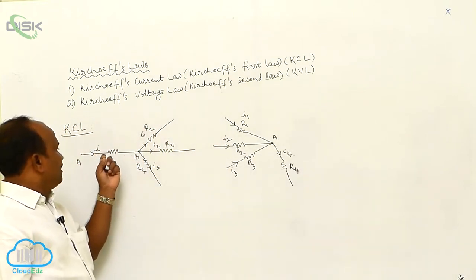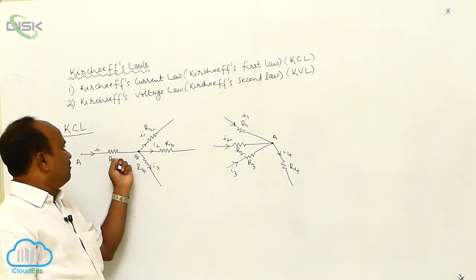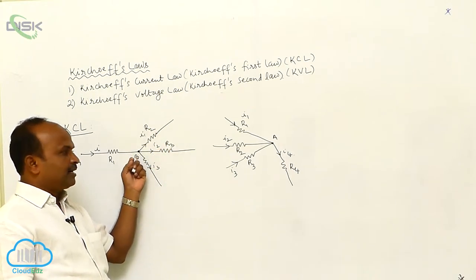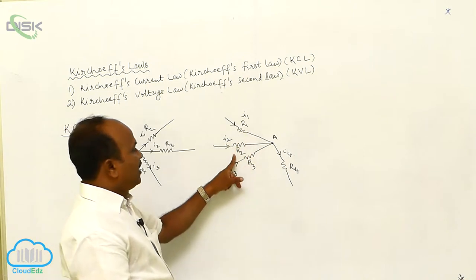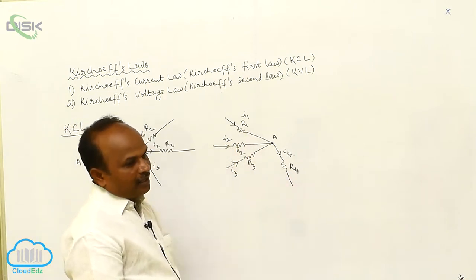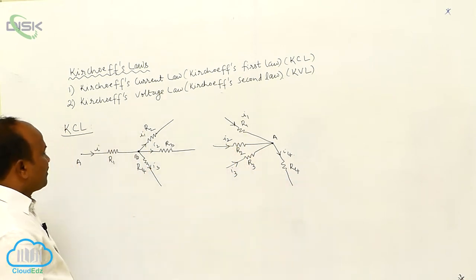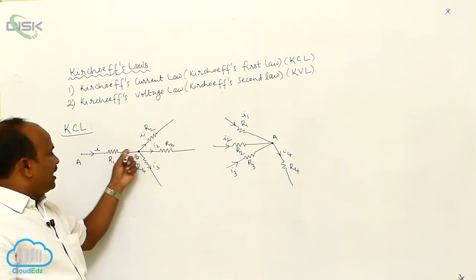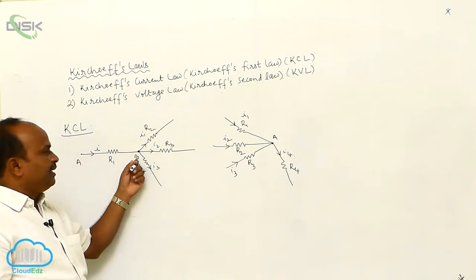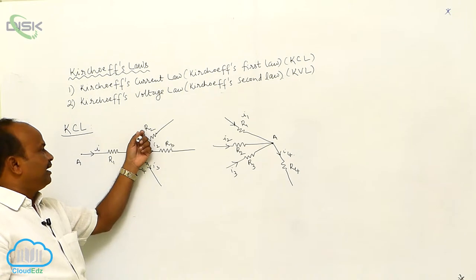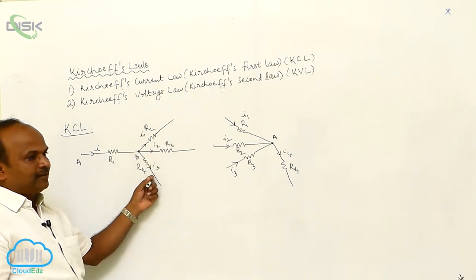Here, R1, R2, R3, R4 resistors are connected like this. The incoming current I, as it reaches point B, is going to divide into I1, I2, I3.